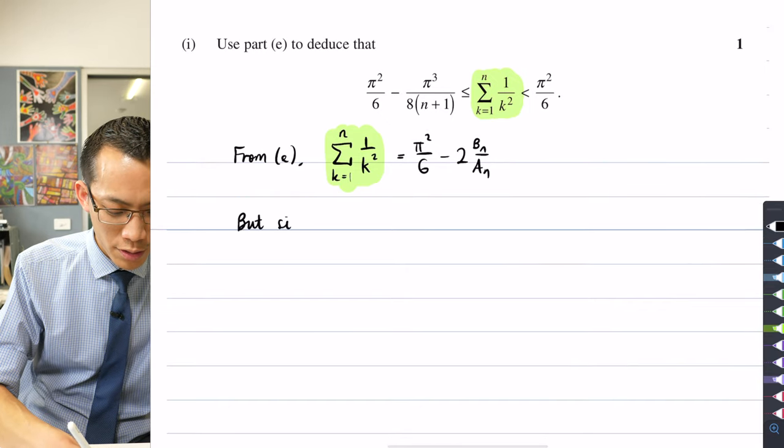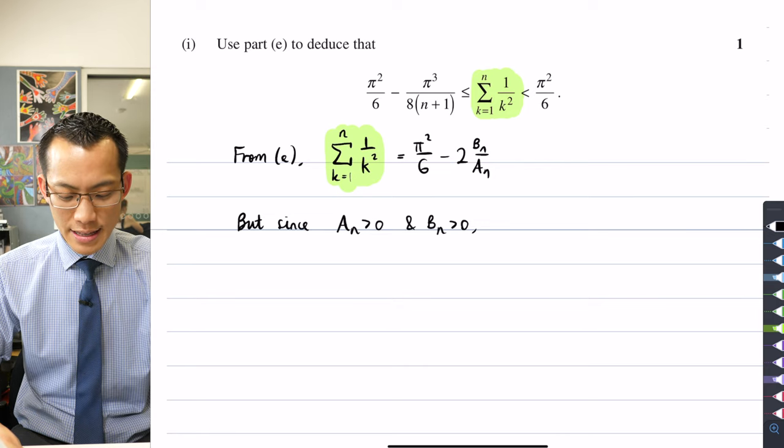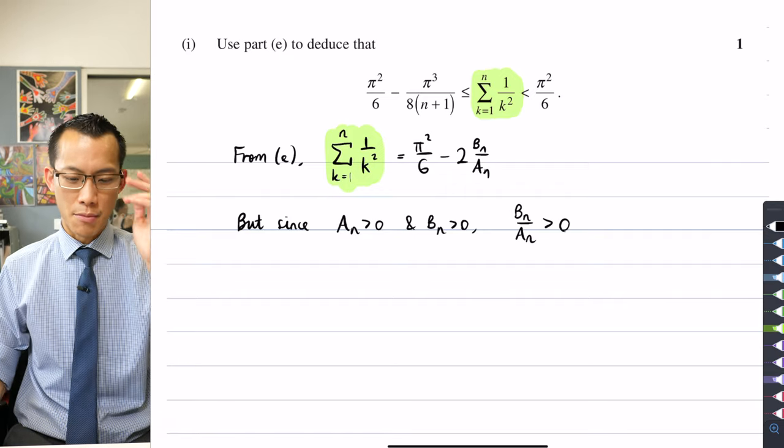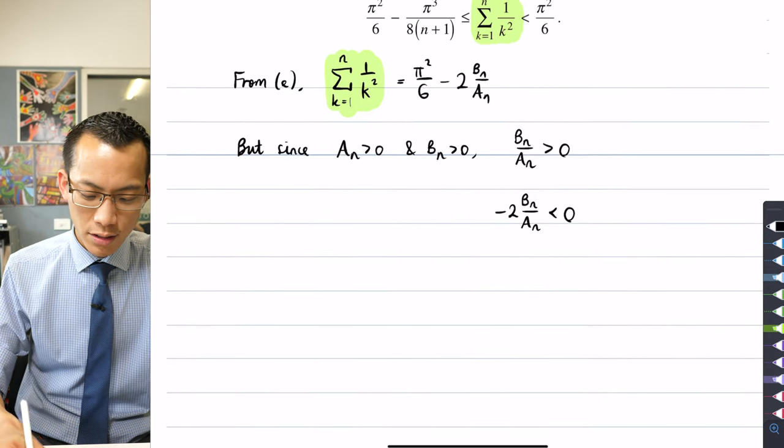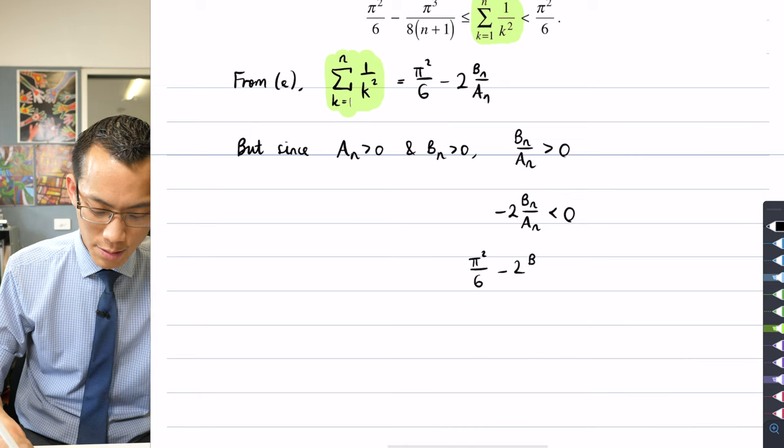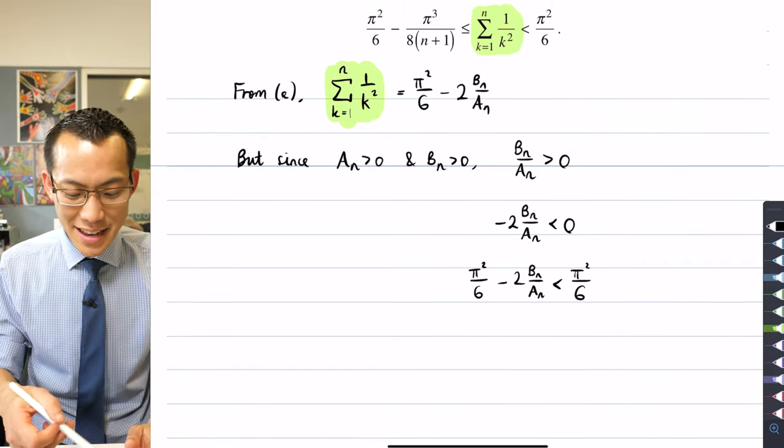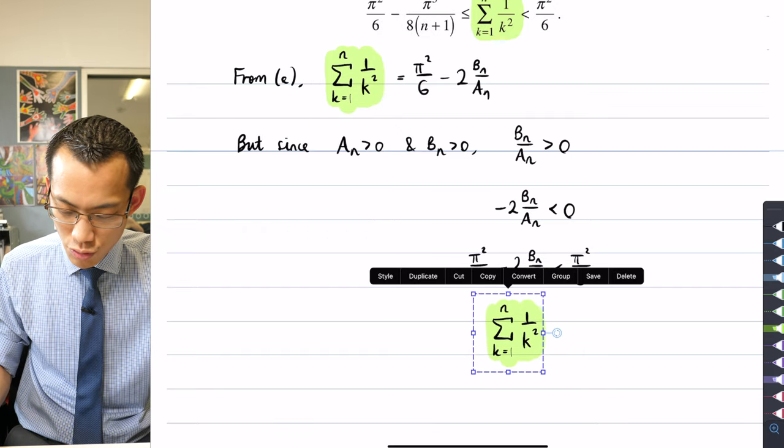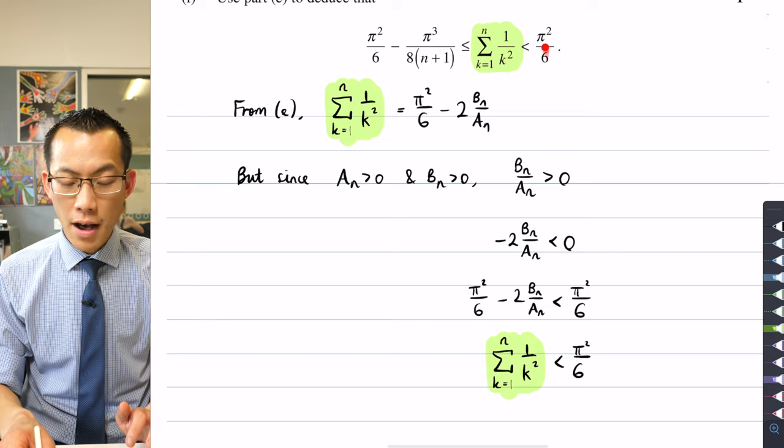So I'm going to say, but since both of those things are positive, An is greater than zero and Bn is greater than zero. What that tells me is that the quotient Bn on An, that itself is going to be greater than zero, divide two positive numbers, you'll get another positive number out, which means that minus two, if you multiply that through, then it's going to switch that inequality around. That's got to be negative. And so I just need to get to this. I'm going to add π²/6 to both sides. π²/6 take away this is less than, I added π²/6 to the left, so I'll add it to the right.